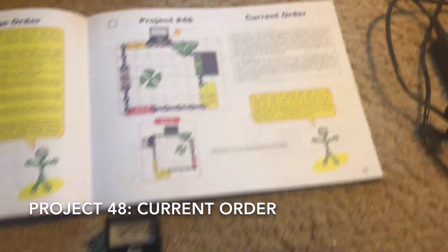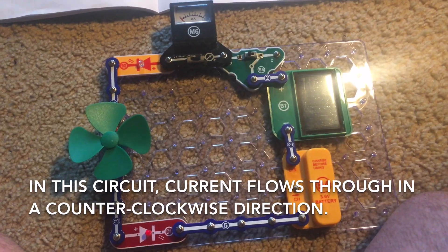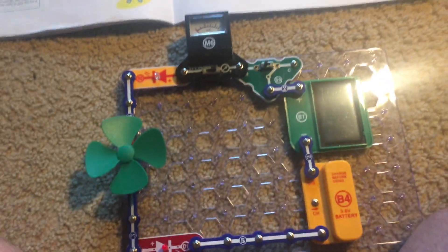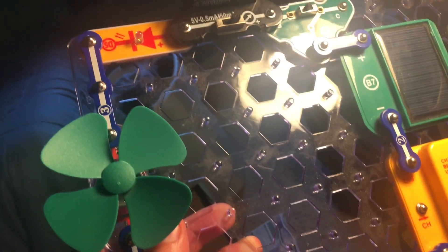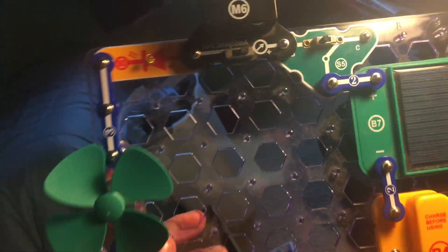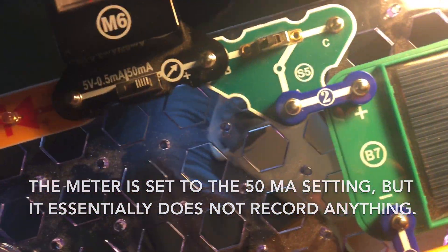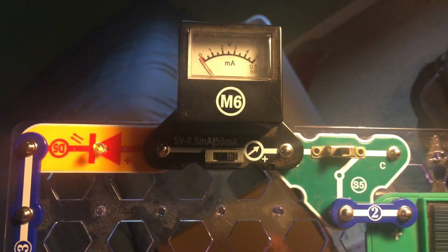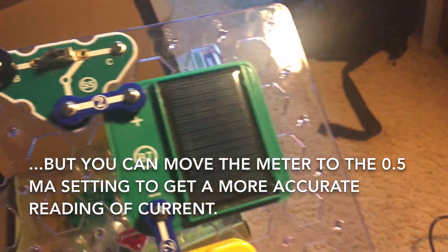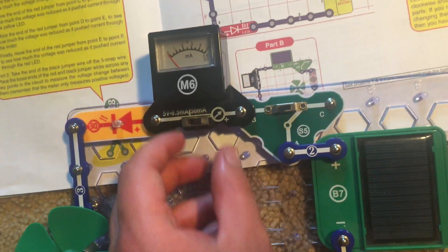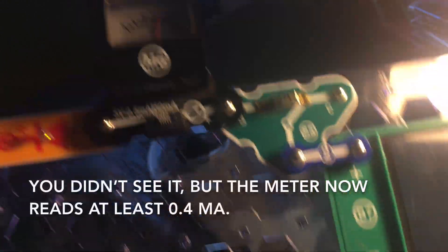Project 48 current order features the components in a loop and the current runs through them in a counterclockwise direction. I will move the circuit up to the light source and both LEDs come on to a certain extent. And the voltage meter is set to the 50 milliamp setting, but on that setting, it does not really record anything. Now, the fan does not spin. There is not enough power to spin it, but what you can do is move the meter to the 0.5 milliamp setting. And now you can see that it reads 0.4 milliamps.